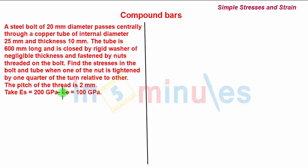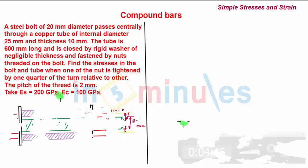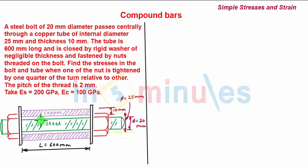They have also given the diagram of this problem. We have the steel bolt of diameter 20 mm and a copper tube of internal diameter 25 mm and thickness 10 mm.